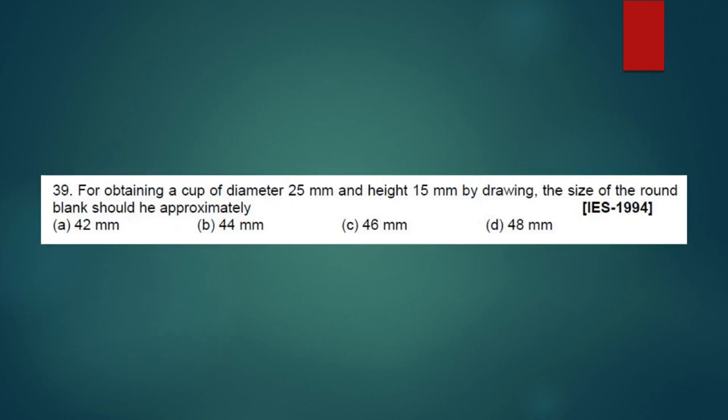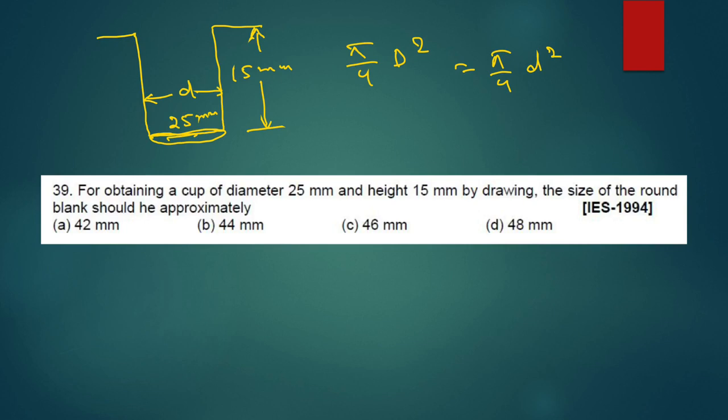For obtaining a cup of diameter 25mm, height 15mm by drawing, size of the round blank should be approximately. Our data given is height 15mm, diameter is here 25mm. This is small d - small d is this diameter, and height is from here to here. We have to calculate size of the round blank, capital D. We know pi by 4 D square is equal to pi by 4 this area, small d square plus this one, pi d into height, small h.